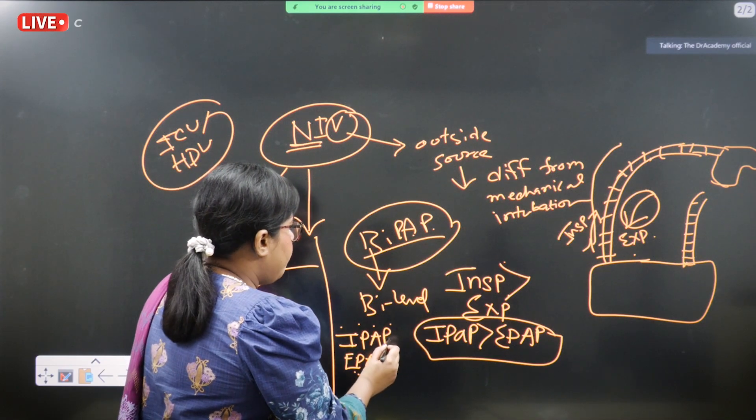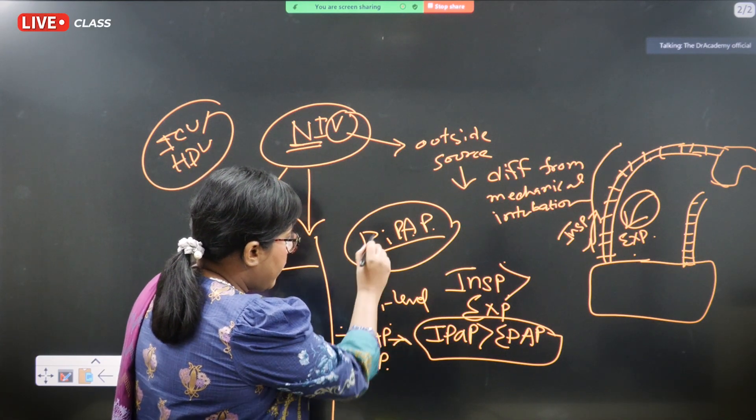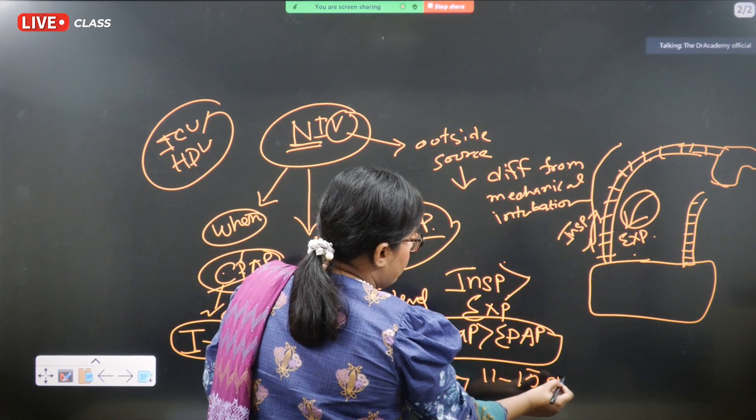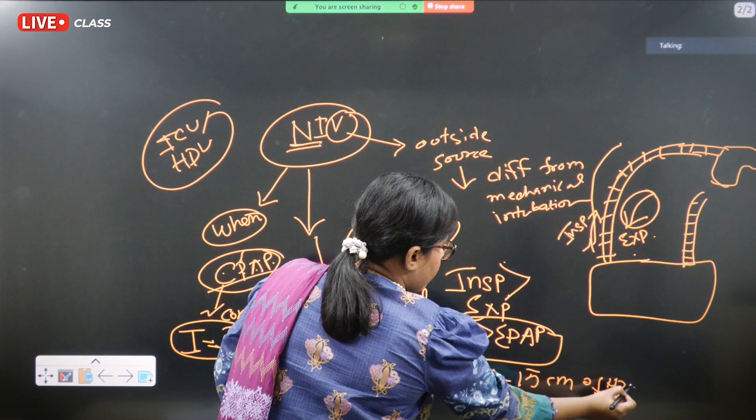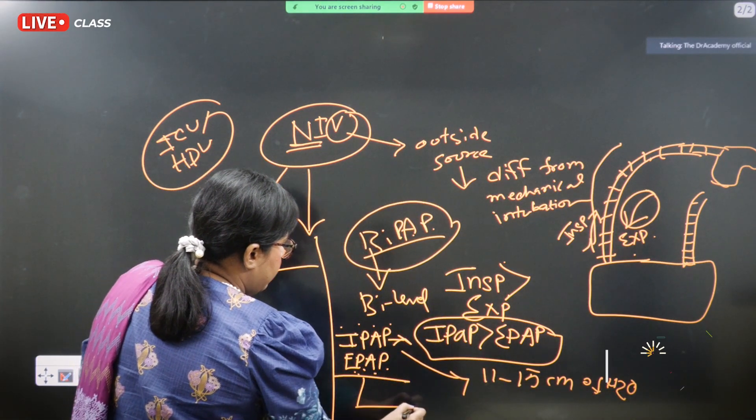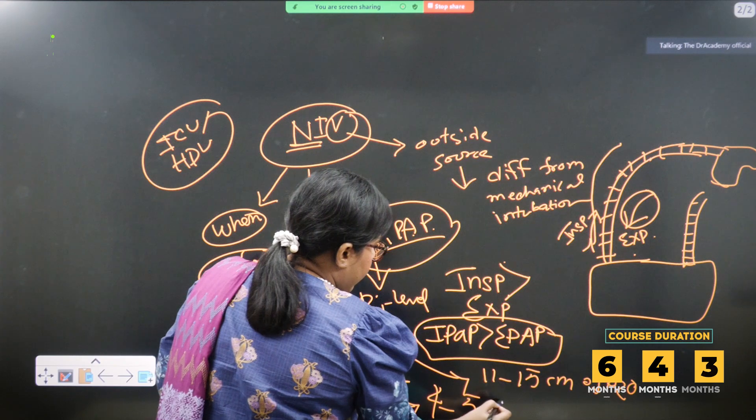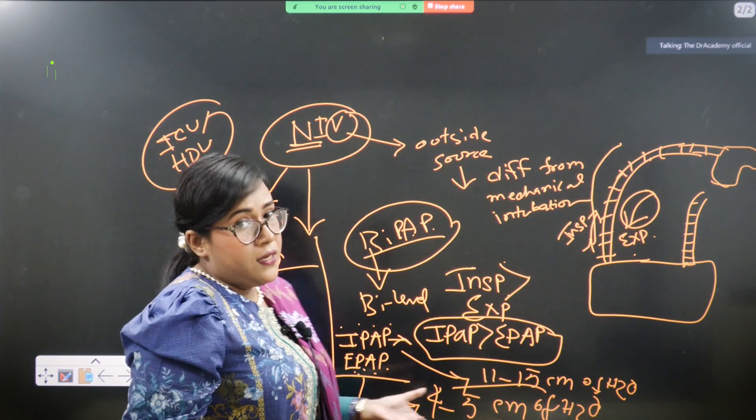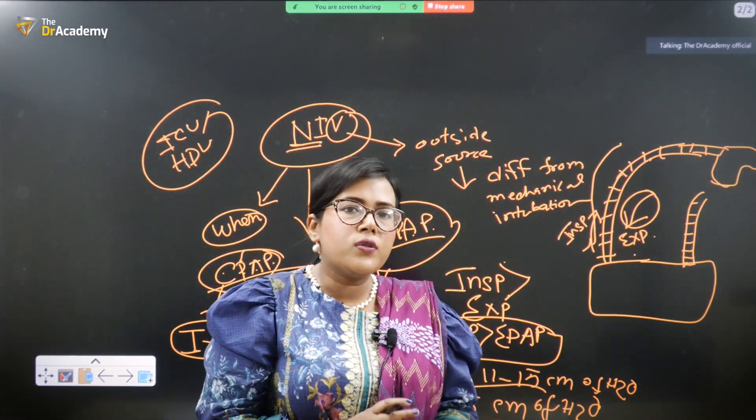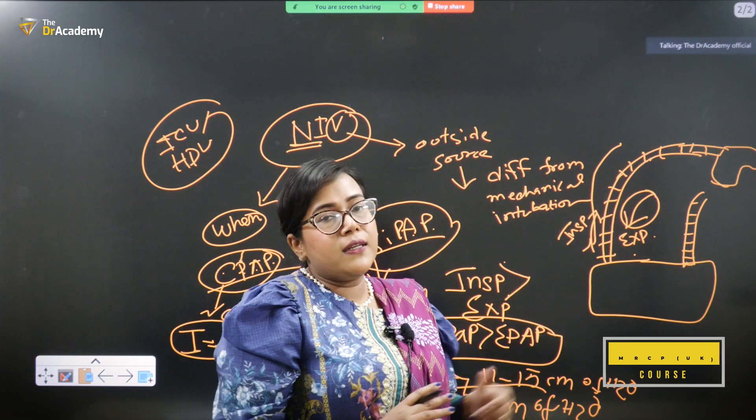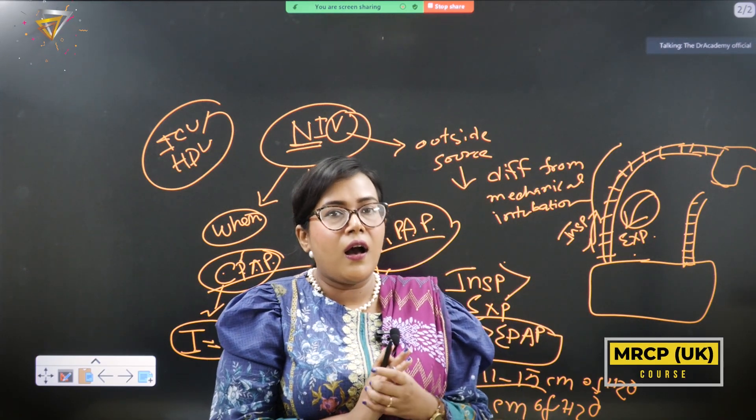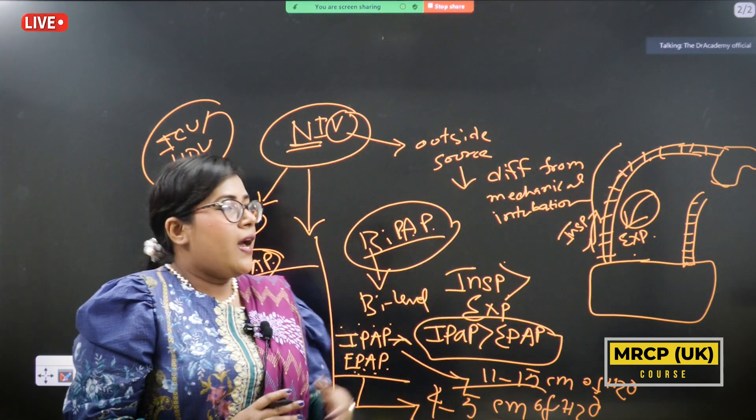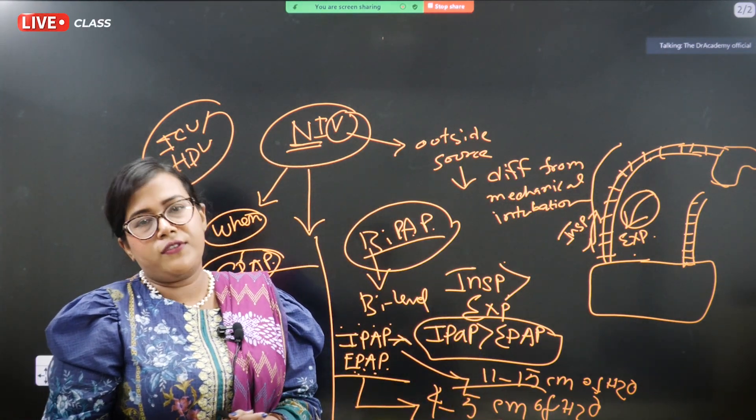So the water level of pressure is usually maintained in case of BiPAP is the IPAP is ranging from 11 to 15 centimeter of water and the EPAP is usually maintained at the level of 4 to 5 centimeter of water. These values can vary from device to device and they can also vary from person to person. These values can be adjusted by the help of an ICU specialist or intensivist and a respiratory specialist and it depends on the ABG report of that particular patient.